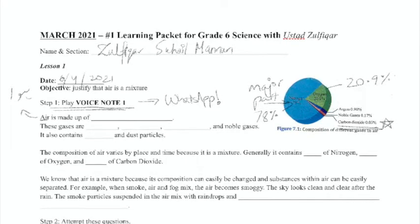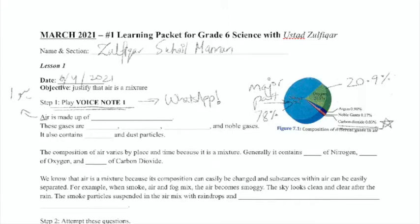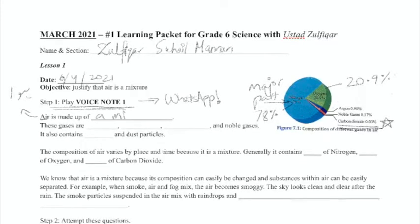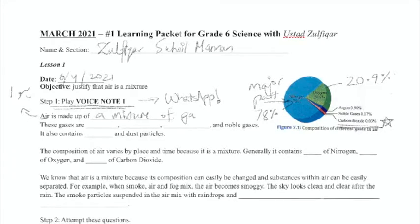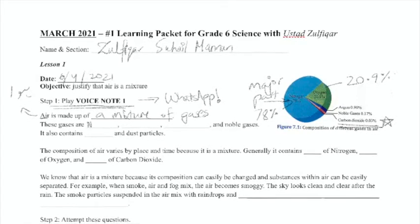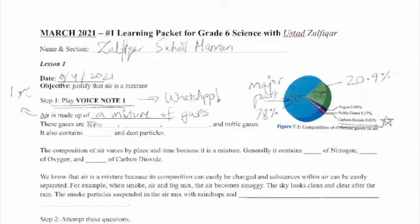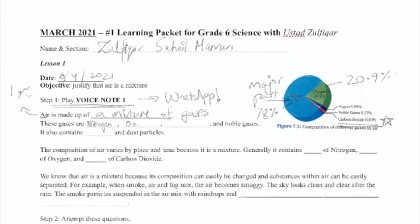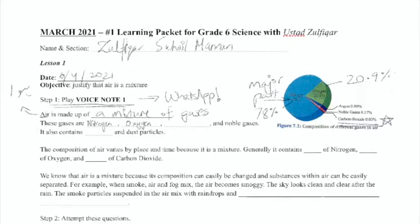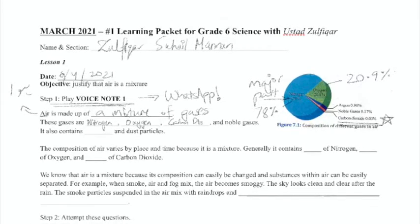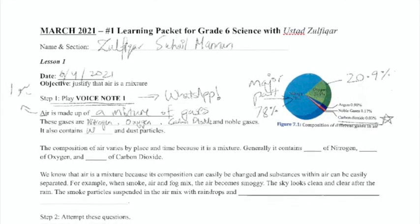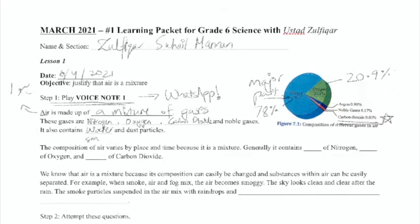Air is made up of a mixture of gases. These gases are nitrogen, oxygen, carbon dioxide, and noble gases. It also contains water, smoke, and dust particles.